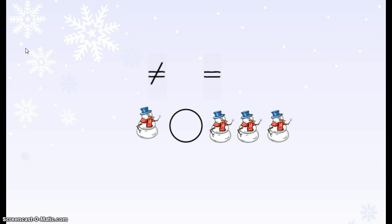Let's try another one. Here, I count 1 snowman, and on the other side, I count 1, 2, 3 snowmen. I know that 1 is not the same as 3, so they're unequal.